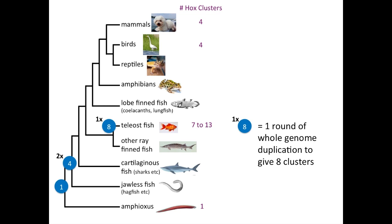At the base of the fish lineage, it's likely there was an additional round of whole genome duplication, increasing the number of clusters from four to eight Hox clusters in ancestral fish. This was then followed by a variety of additional single gene or single cluster duplications and losses in the various fish lineages. In the zebrafish lineage, there appears to have been loss of one entire cluster, bringing the total from eight to seven, while in the salmon lineage there appears to have been a fourth round of whole genome duplication followed by some gene losses. Overall, fish show quite a lot of individual variation in the exact composition of Hox genes against this general backdrop of whole genome duplication to eight clusters in the ancestral fish species.